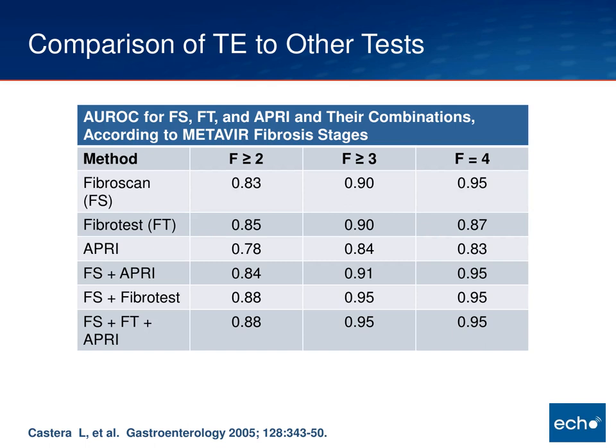How do all these non-invasive tests stack up? Again from the Castera paper: FibroScan has the best area under the curve — about 0.90 to 0.95 depending on what stage you're picking up. FibroTest is a little bit lower, and APRI is the cheapest but also the least accurate. However, once you start combining FibroScan with some of these other tests, accuracy jumps up again — FibroScan combined with FibroSure/FibroTest is probably your best combination across the board.